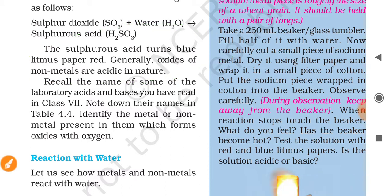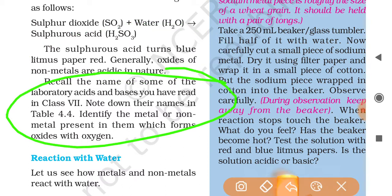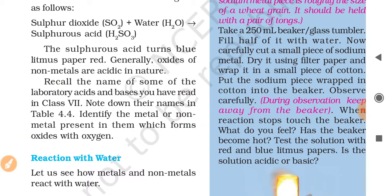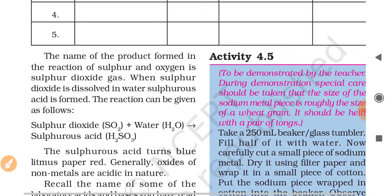Recall the names of some of the laboratory acids and bases you have read in Class 7. Note down their names in Table 4.4. You have to go back to your Class 7, and now in Class 8, you can understand what are the metals and nonmetals. Note down their names in Table 4.4. Identify the metal or non-metal present in them which forms oxide with oxygen.